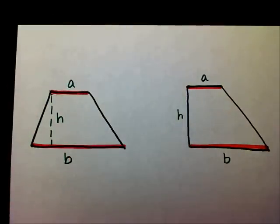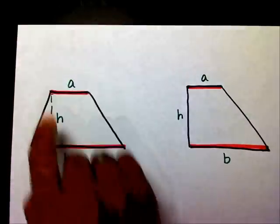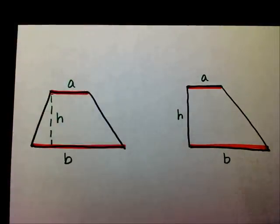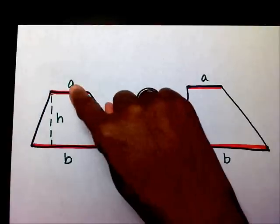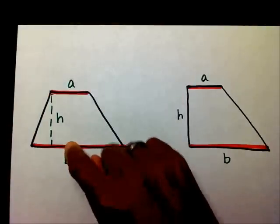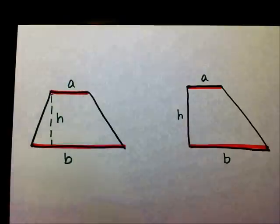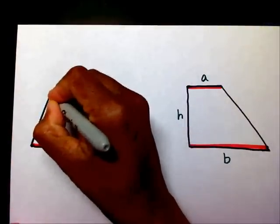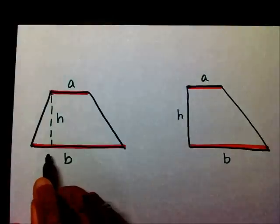And then you have the height of your trapezoid. The height of the trapezoid is the distance from one parallel line to the other parallel line, a straight distance. So, if you were to start at this point and drop a line straight down, you would end up right here, and that would be your height.